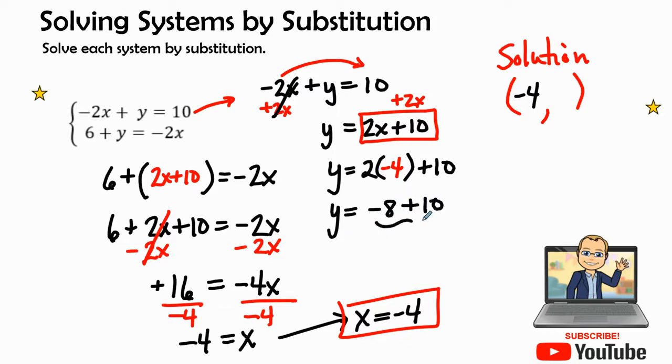Y equals 2 times a negative 4 is a negative 8 plus 10. That combined like terms. And so the y equals a positive 2. There is my y value right there. So in this equation of this system, I know that my solution is a negative 4 plus 2.